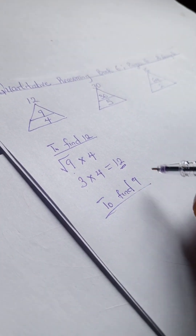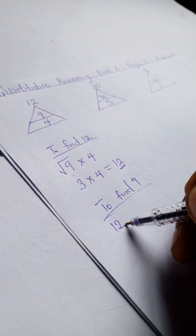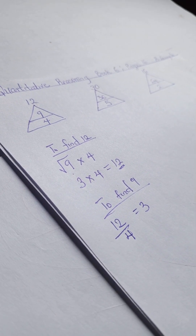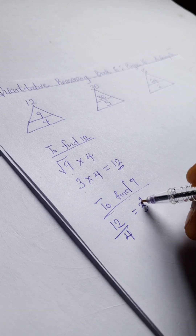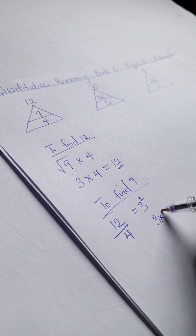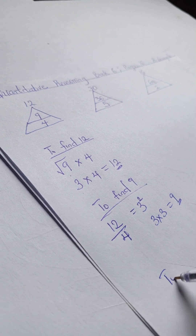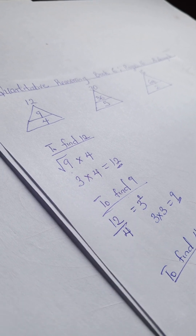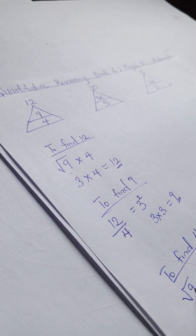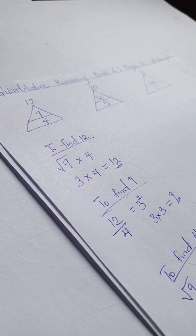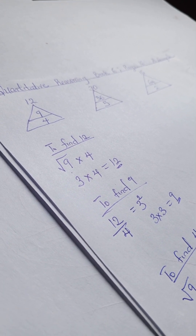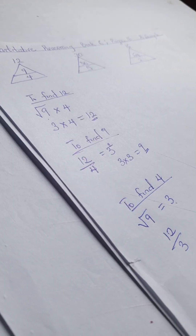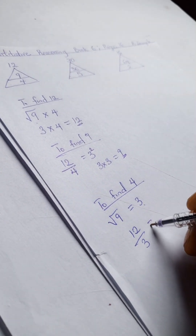To find 9, we have 12 divided by 4, which is 3, and 3 squared — that's 3 times 3 — gives us 9. To find 4, we take the square root of 9, which gives us 3, and then 12 divided by 3 gives us 4.